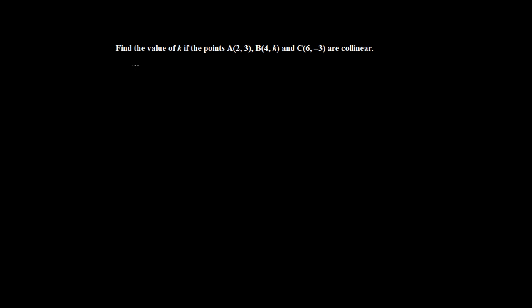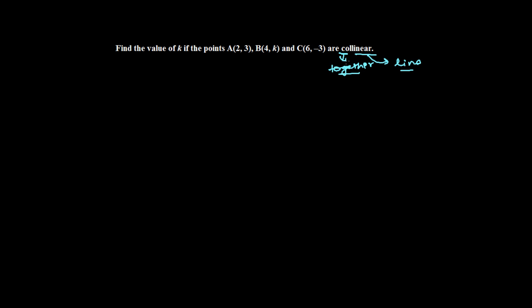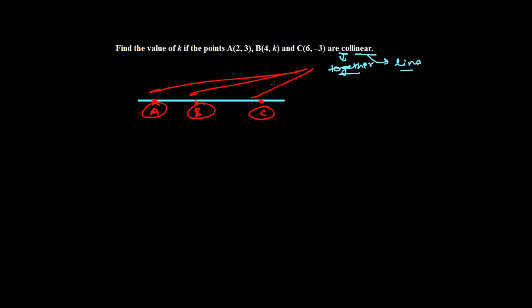We have a conceptual question: find the value of k if the points A(2,3), B(4,k), and C(6, 3-k) are collinear. Collinear means 'together in a line' — co means together and linear means line. So points which lie together on one line are called collinear points. If we have a line with point A, point B, and point C all on it, those three points are called collinear points.